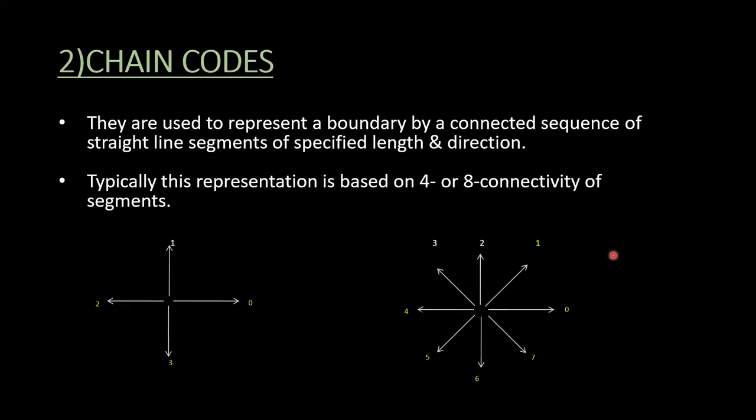So let us see what chain codes are. Chain codes are used to represent a boundary by a connected sequence of straight line segments of specific length and direction. Typically this representation is based on a 4 or 8 connectivity of segments. The direction of each segment is coded by using a numbering scheme. Here 0 to 4, 0 to 3, and here 0 to 7.